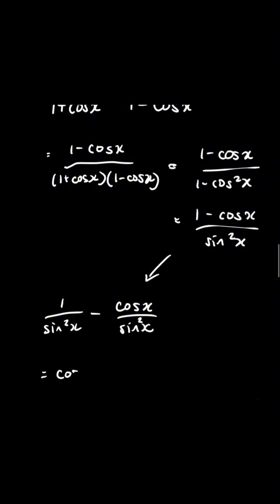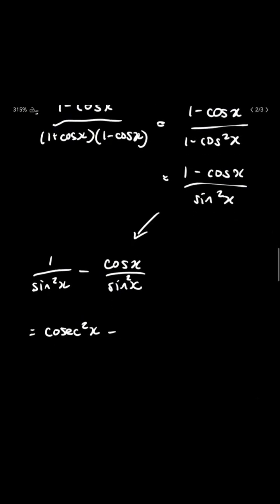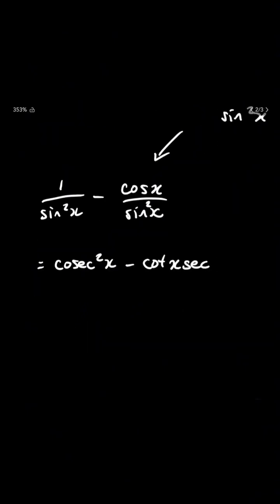We know that 1 over sine squared x is cosec squared x. And the second fraction is actually cos over sine times 1 over sine. Cos over sine is just cot x, and 1 over sine is cosec x.